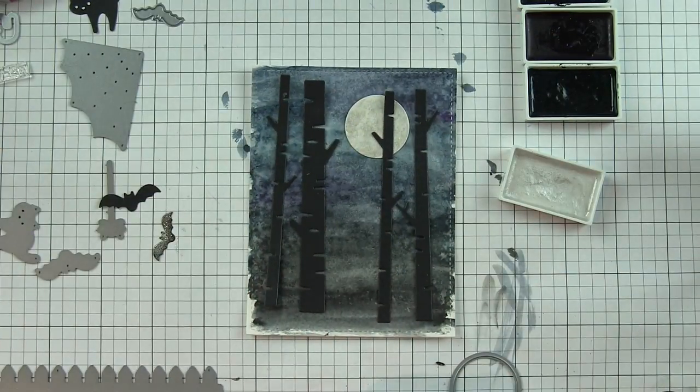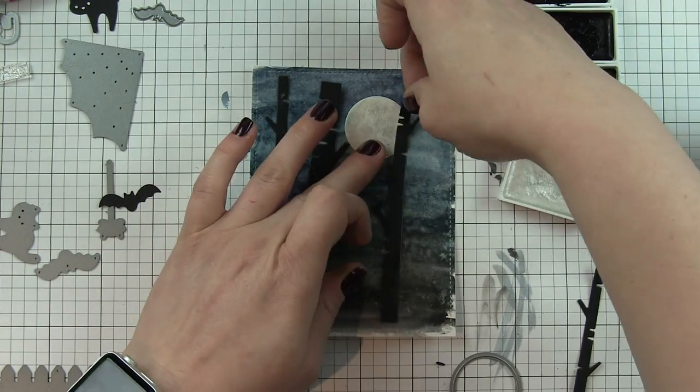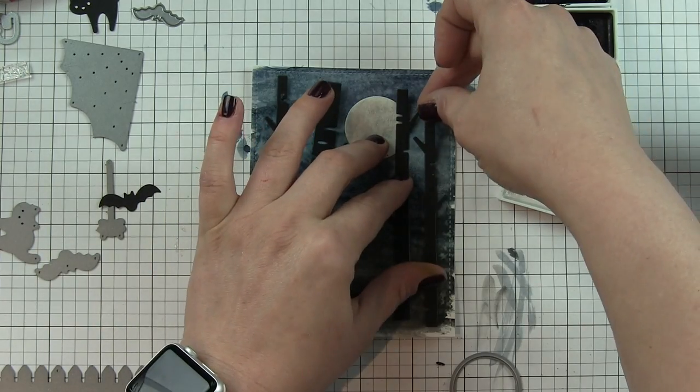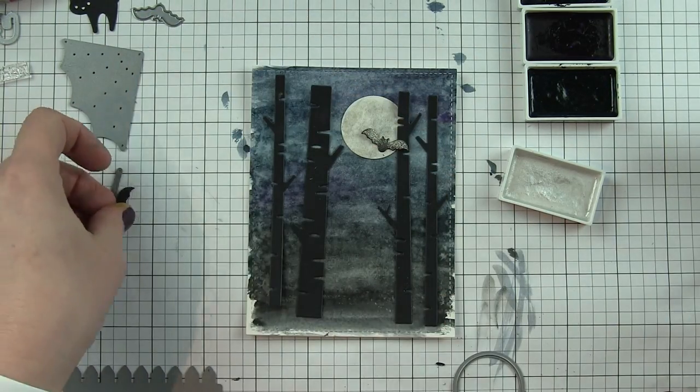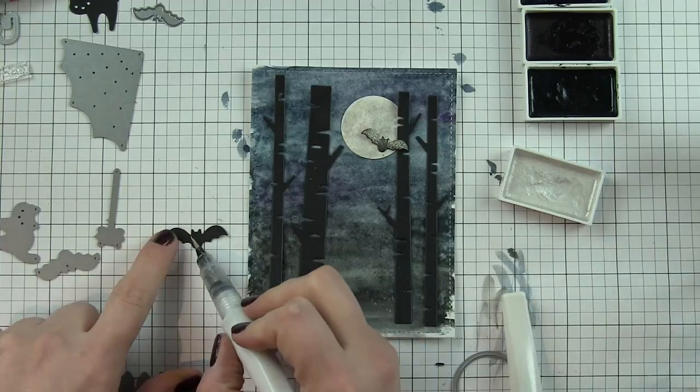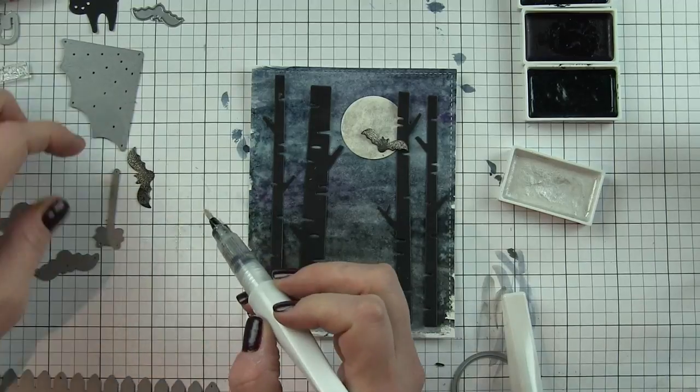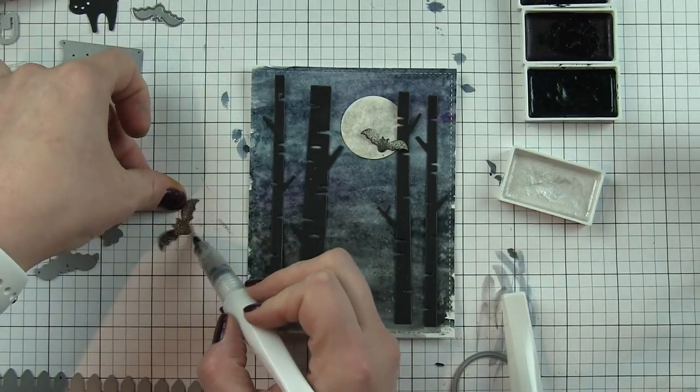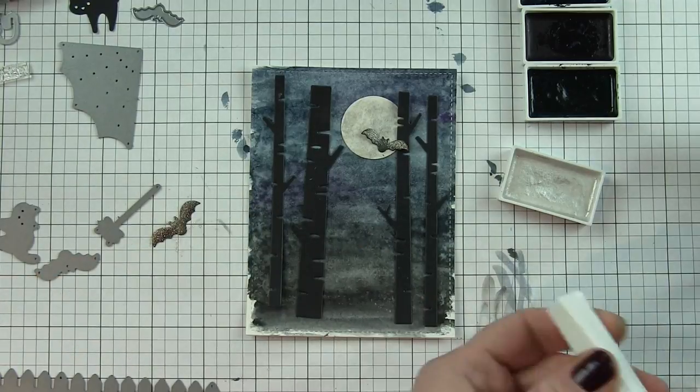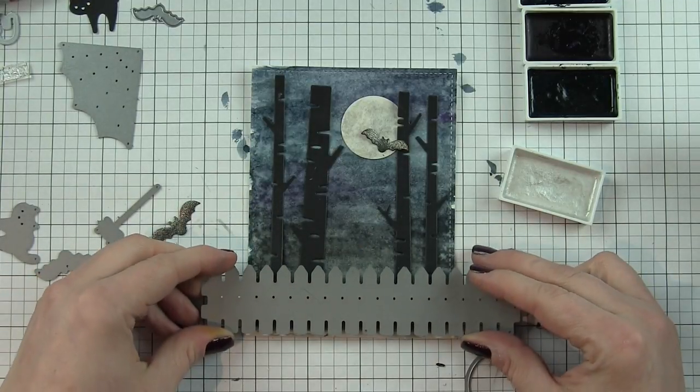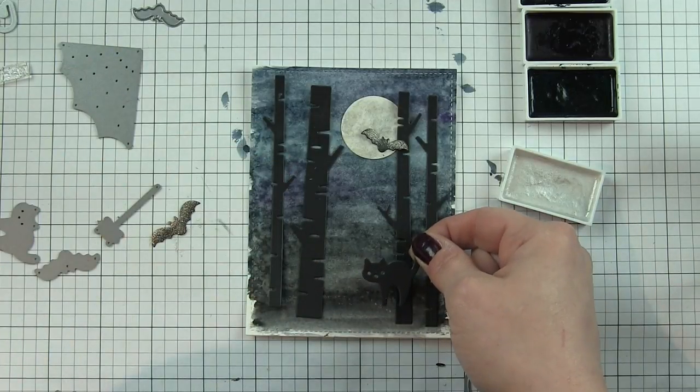From the scalloped treat box I've got the two bats and the black cat also die cut from black licorice cardstock. Now one of the things I did for the scalloped treat box is take the Wink of Stella clear glitter brush pen to the bats. I love that look so much that I wanted to replicate it for my card here. I'm going to have a couple bats against that awesome moon background.